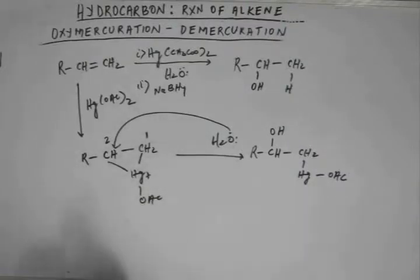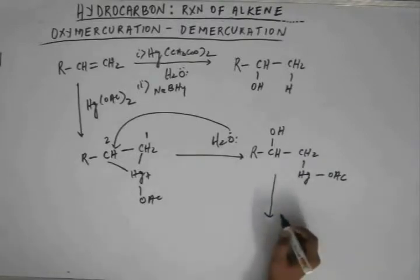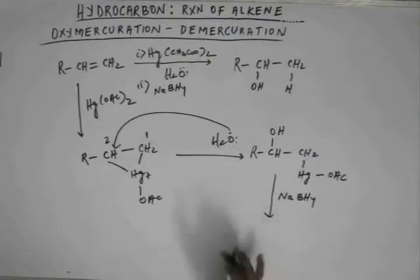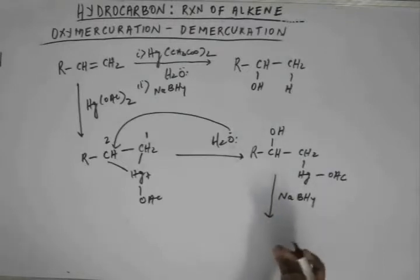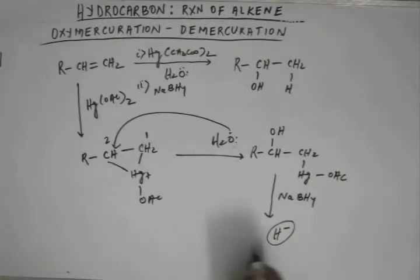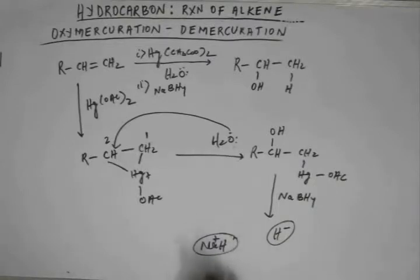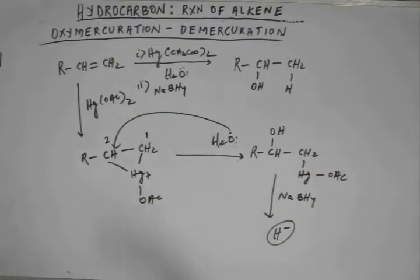Now what we do is add sodium borohydride and remove off this mercuric acetate. Sodium borohydride, like lithium aluminum hydride, is a hydride generator. When you see sodium borohydride, you have to think of it as a hydride generator. All it does is generate hydride ion in the system in a controlled fashion. It is different from sodium hydride — when you add sodium hydride, Na⁺H⁻, this H⁻ is free and not in a complex form, making the reaction violent. Sodium borohydride produces hydride ion in a controlled fashion.